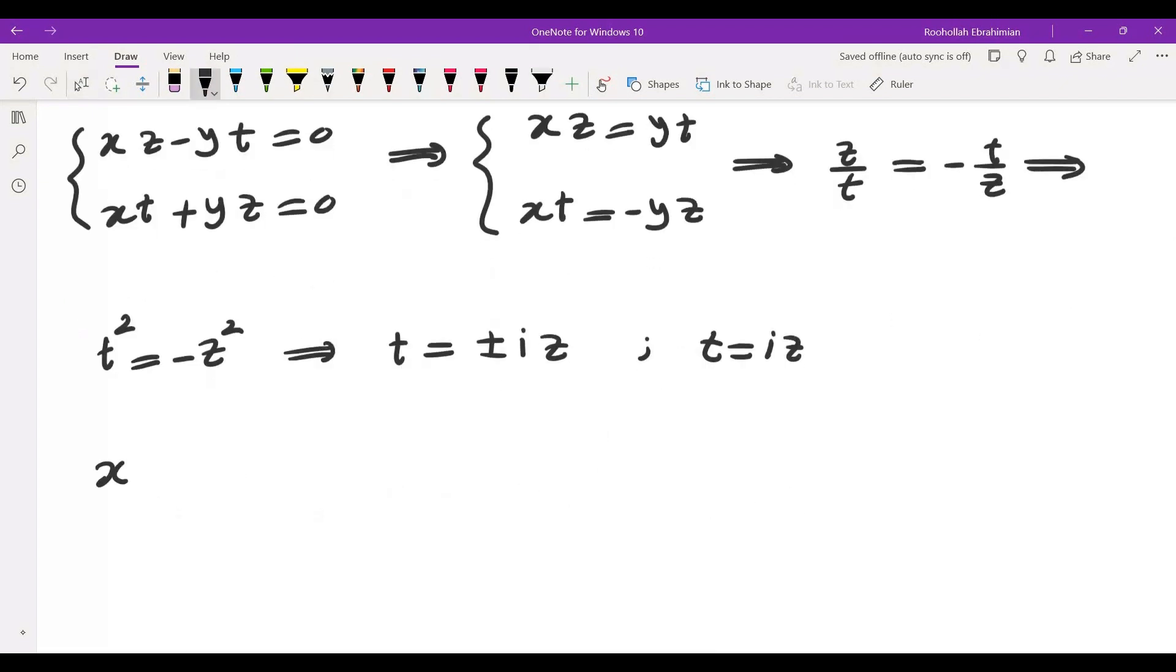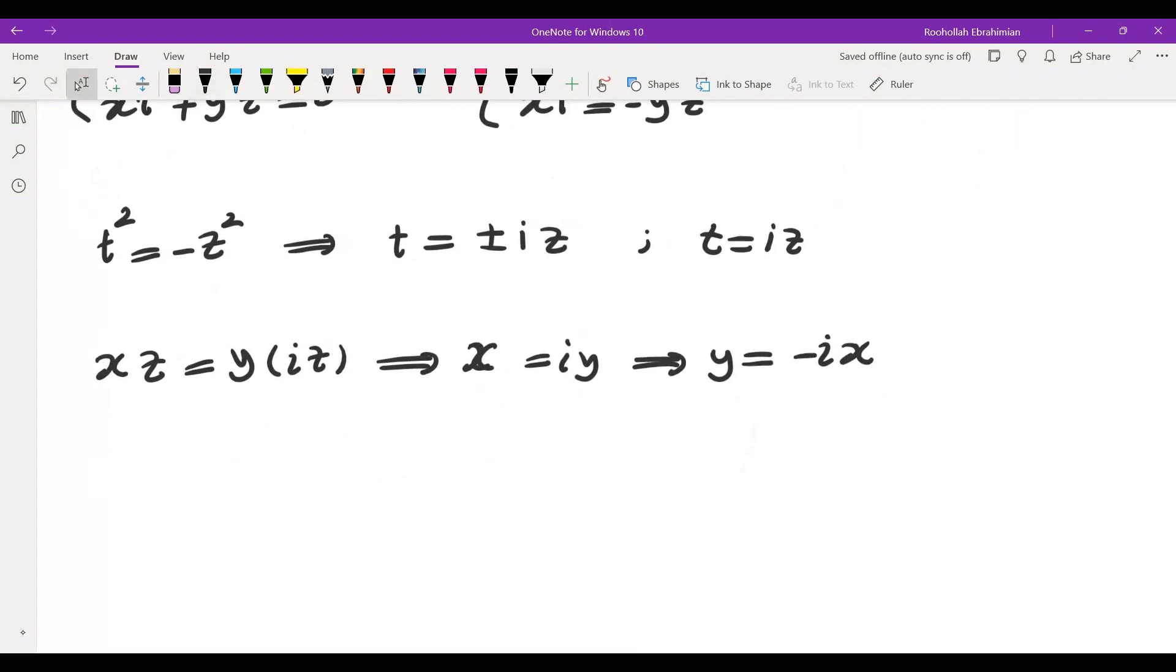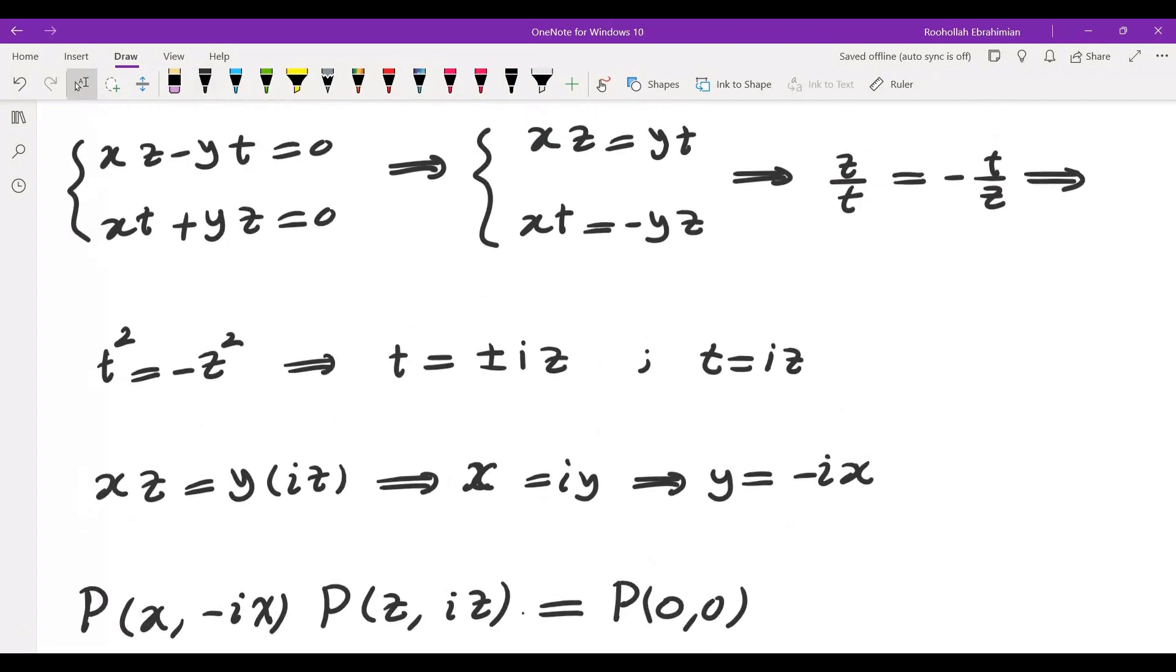Let's take that and plug it into equations. We get X times Z is equal to Y times IZ. That gives me X equals IY. Writing down the second component in terms of the first I would get Y equals negative XZ. So that means if I substitute Y by negative IX and T by IZ I would end up getting P of 0 comma 0 because again XZ minus YT is 0 so X times Z is the same as negative I squared Z I squared XZ and XT X times IZ is equal to negative Y times Z. So that's P of 0 comma 0 which is 0. We already discussed that.